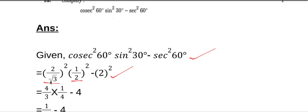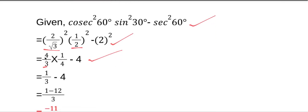So (1/2)² = 1/4 minus 2² = 4. Simplifying: 4/3 × 1/4 - 4 = 1/3 - 4.